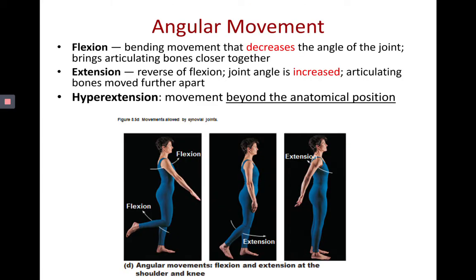For example, bending the knee is flexion because we're decreasing the angle between the tibia and the femur. Unbending the knee is extension. Moving the arm backwards is extension; moving it forward is flexion. Bending the elbow is flexion; straightening it is extension. Hyperextension would be looking up at the ceiling, since normal anatomical position is facing forward, and flexion would be putting your chin to your chest.